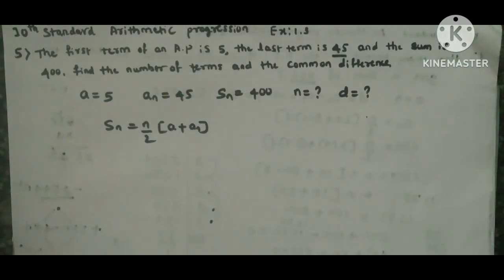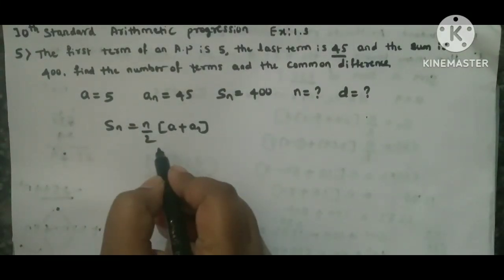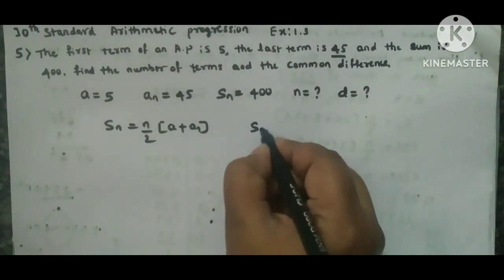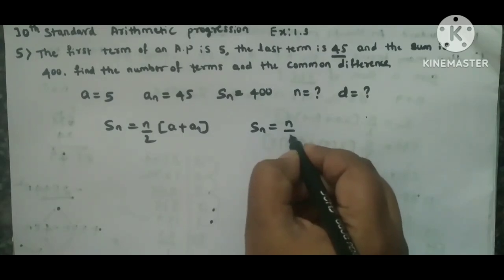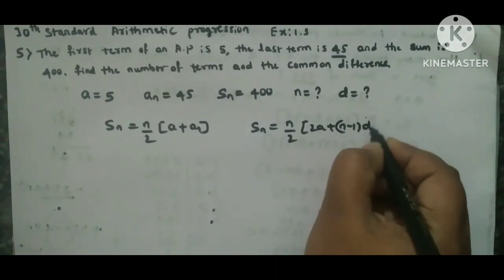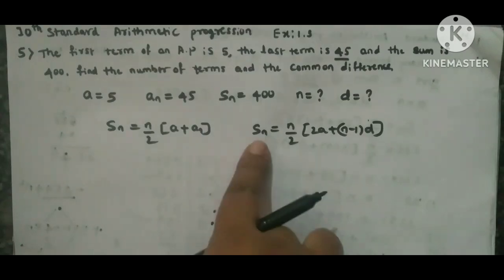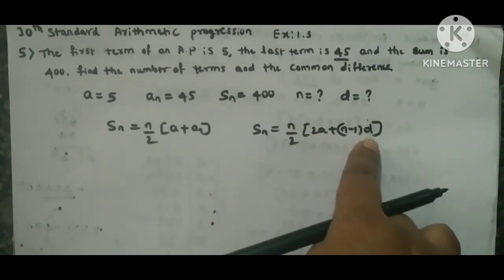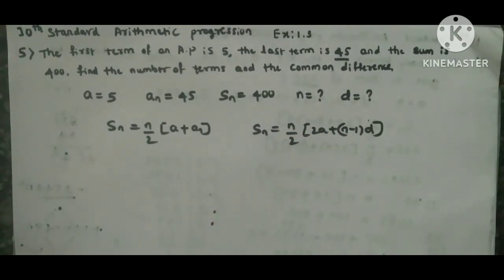Now why we are using this formula? Because if you use one more Sn formula, Sn = n/2 × (2a + (n-1)d), in this you just observe: Sn we know, n we don't know, a we have, d also we don't know. So two unknown things.